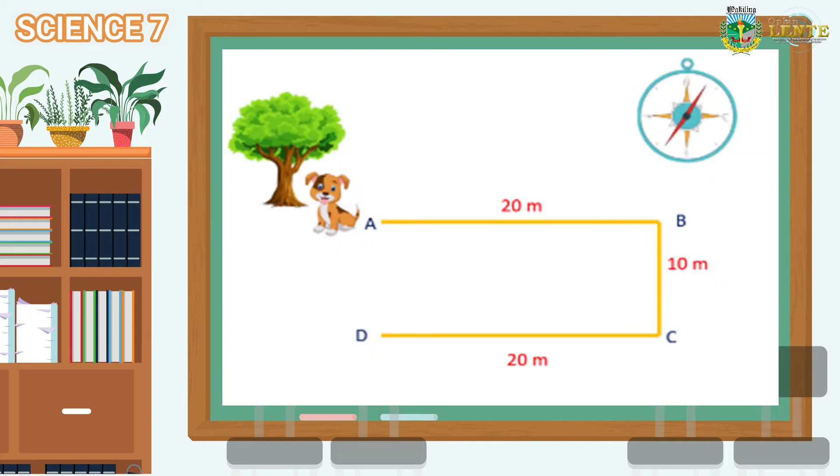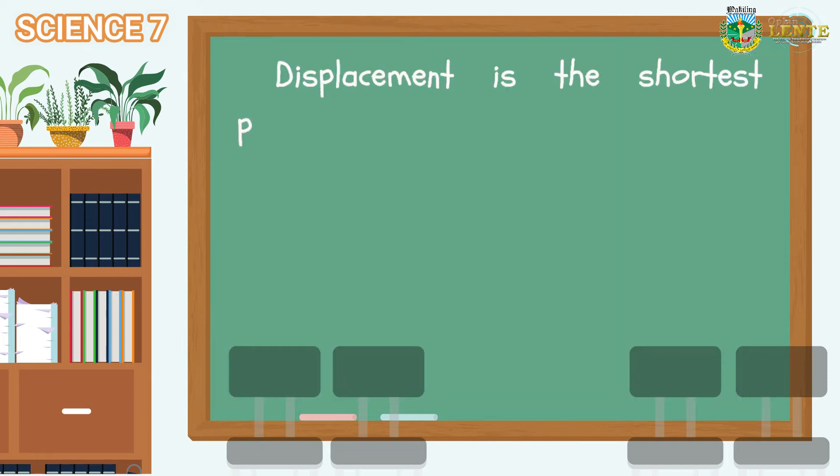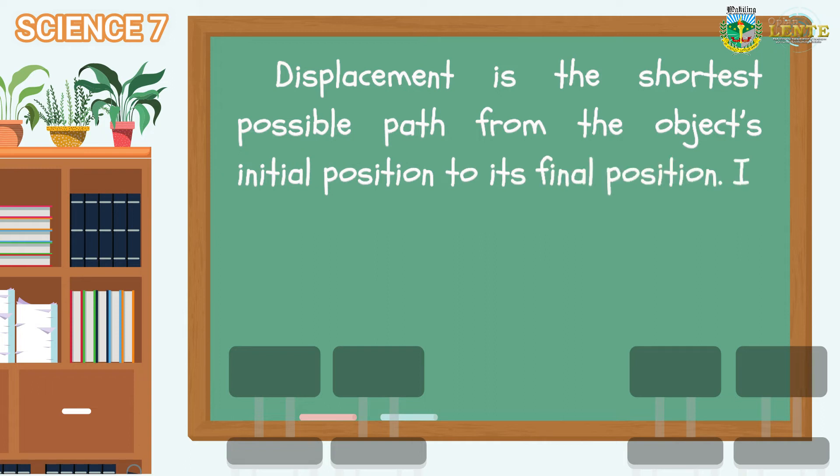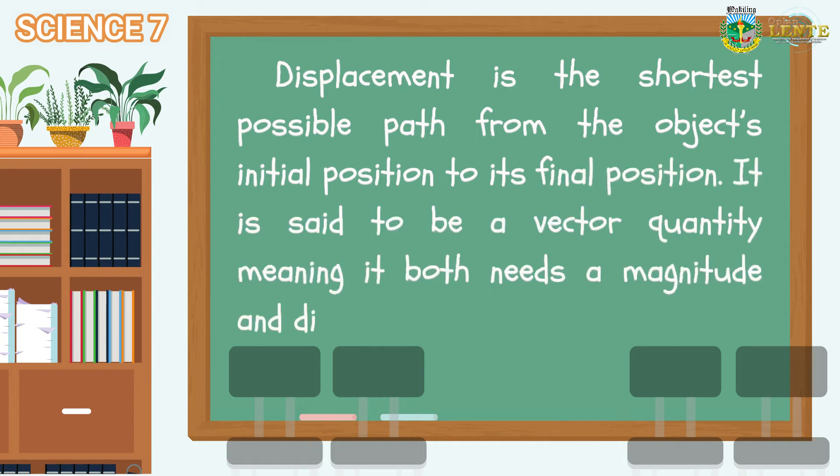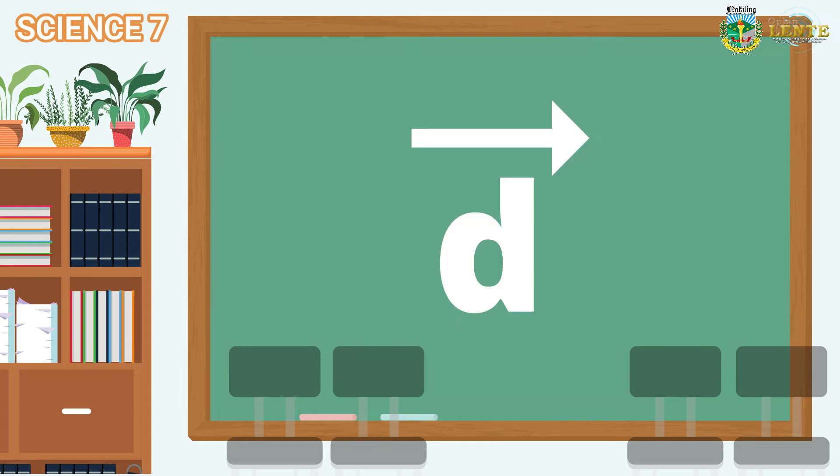What about the shortest possible path from the dog's initial position to its final position? Correct! That is 10 meters to the south. That value is the displacement. Displacement is the shortest possible path from the object's initial position to its final position. It is a vector quantity meaning it both needs a magnitude and direction. Its symbol is the letter d with an arrow above that indicates direction.